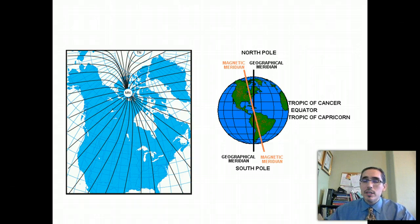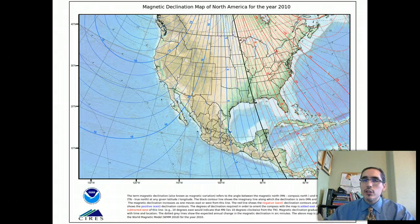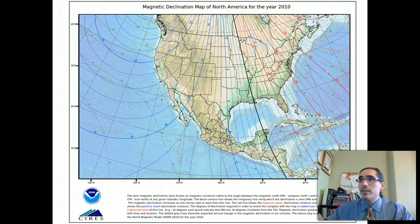The difference between the magnetic north and the true north is referred to as magnetic declination. So in order to find true north with a magnetic compass, you have to consult what's called an isogonic chart. And here's an example of one, also referred to as a declination diagram.